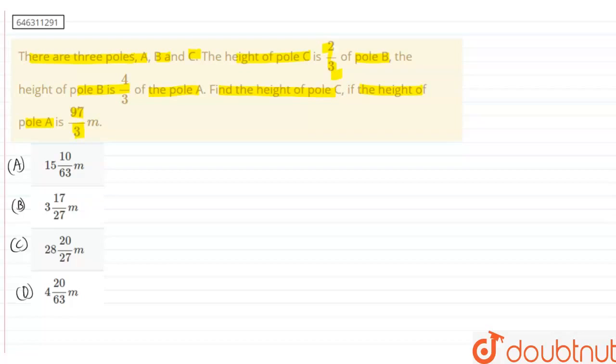According to the given question, the height of pole A is given as 97/3 meters. Pole B's height is 4/3 times pole A, and pole C's height is 2/3 of pole B. What we are going to do is find the value of height of pole C. We will put the value of pole A in the pole B equation, find the value of pole B, and then put that in the equation relating pole B with C.